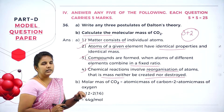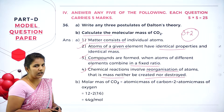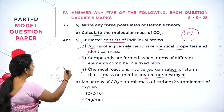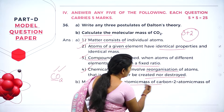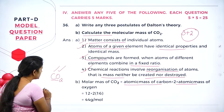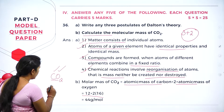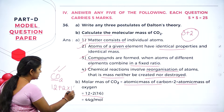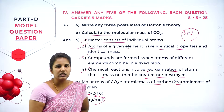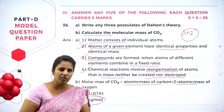Coming to the second question — the calculation of molecular mass for carbon dioxide. How do you calculate the molecular mass? By adding the atomic masses of each element. In carbon dioxide there are two elements: carbon and oxygen. It is atomic mass of carbon plus two times the atomic mass of oxygen — why two? Because there are two oxygen atoms. Atomic mass of carbon is 12, plus 2 into 16 equals 44. So the molecular mass of carbon dioxide is 44 grams per mole.